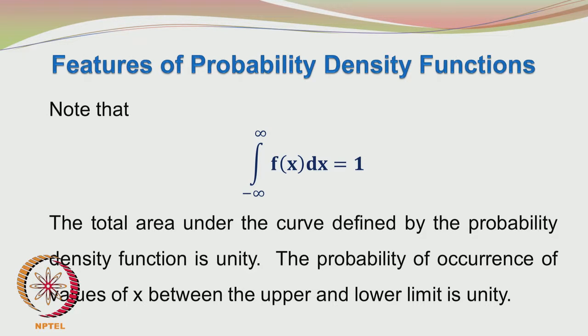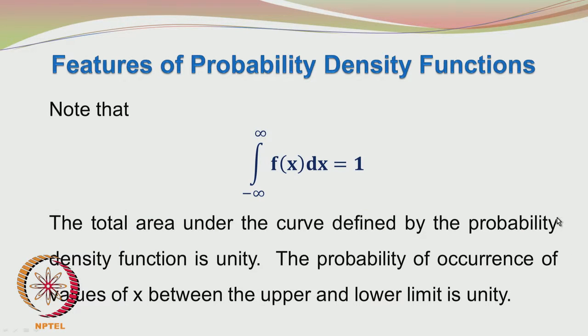Let us look at some features of probability density functions. The area under the curve is equal to 1. Recall that for discrete probability distributions, the sum of f(xi) was equal to 1, meaning all probabilities add up to 1. Similarly, when you take the area under the curve representing the probability distribution you get 1. We are asking: what is the probability of all values of x between the upper and lower limit? Including all values, the probability equals 1.